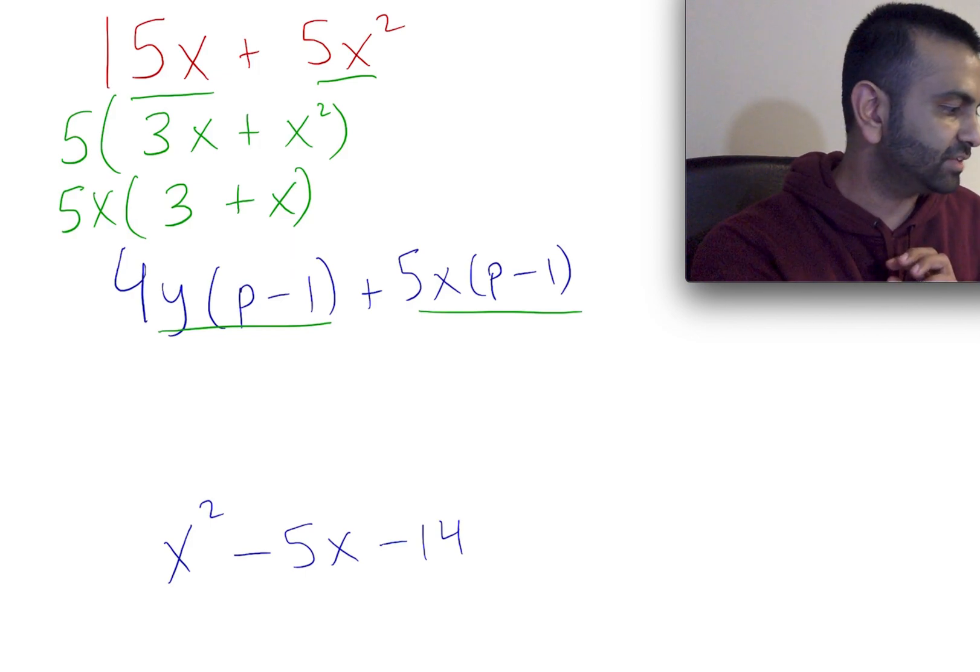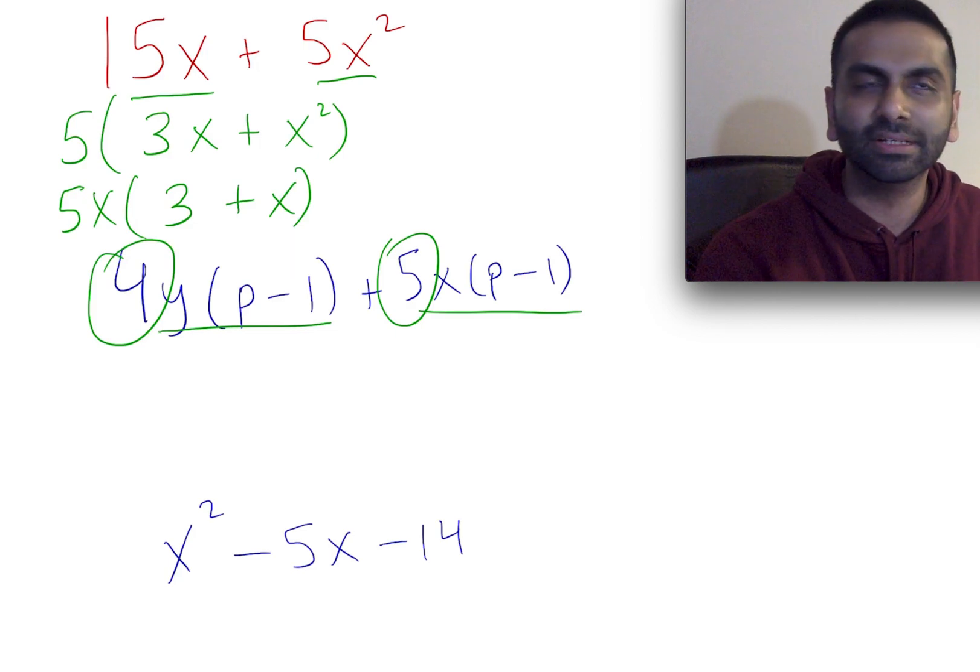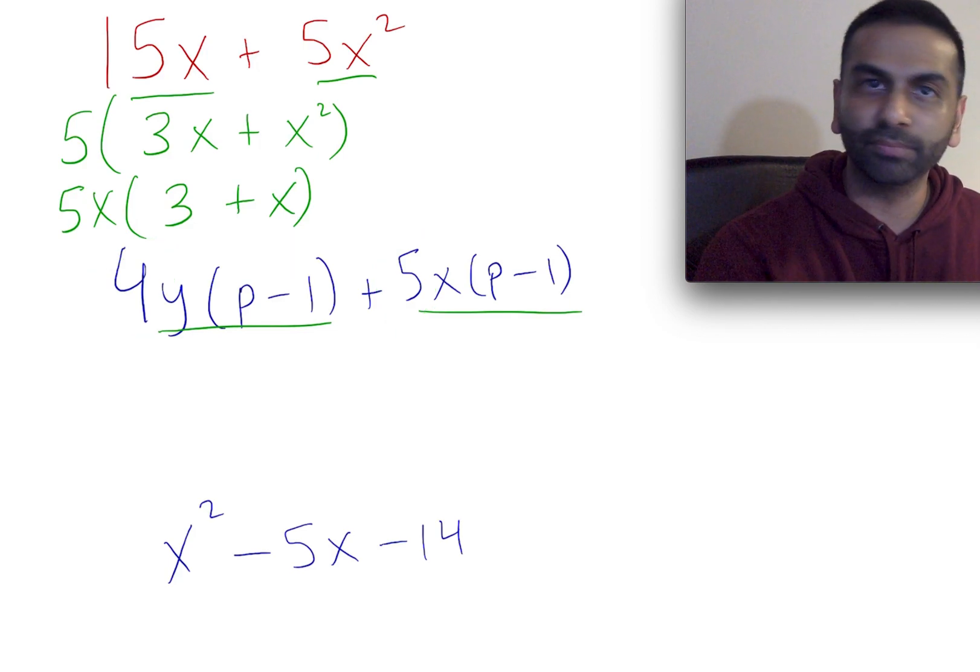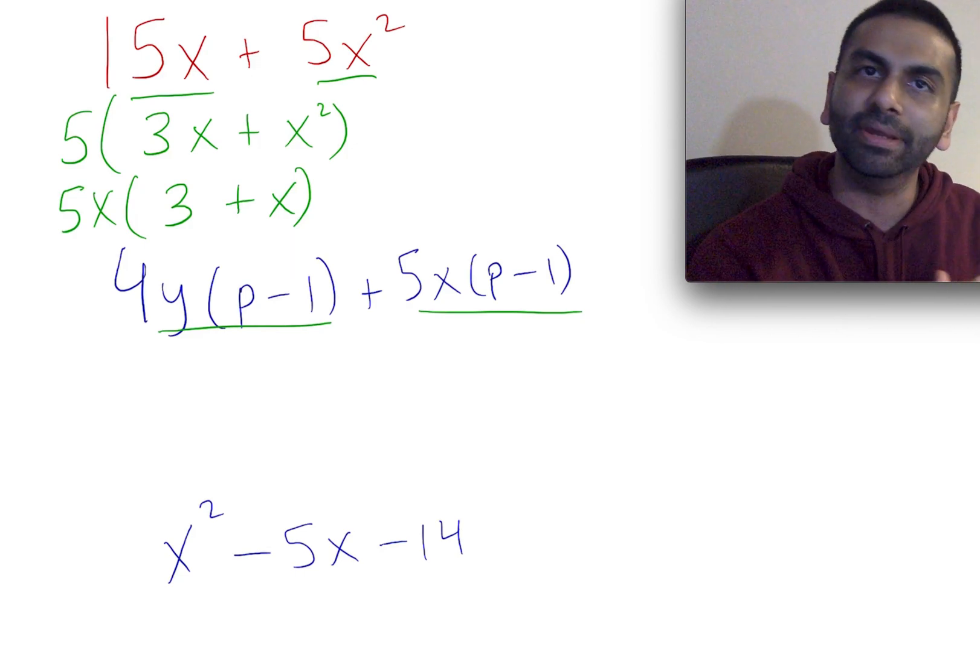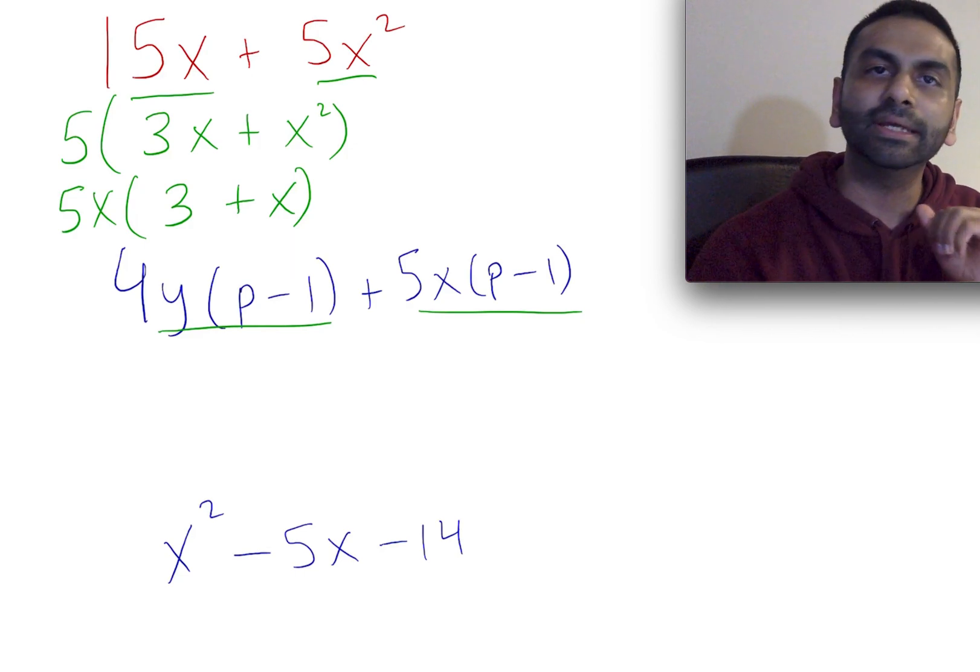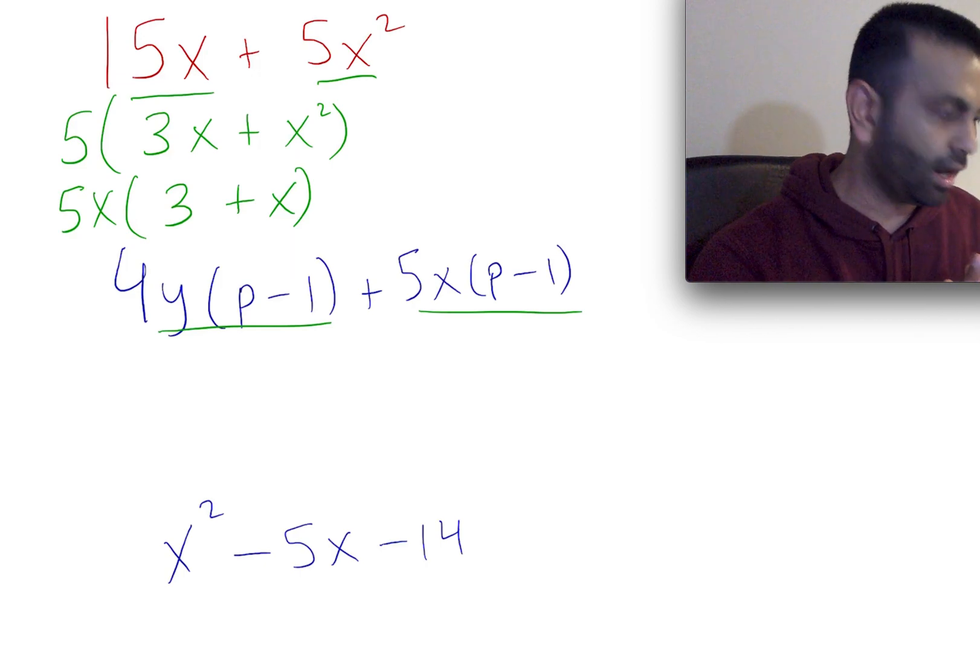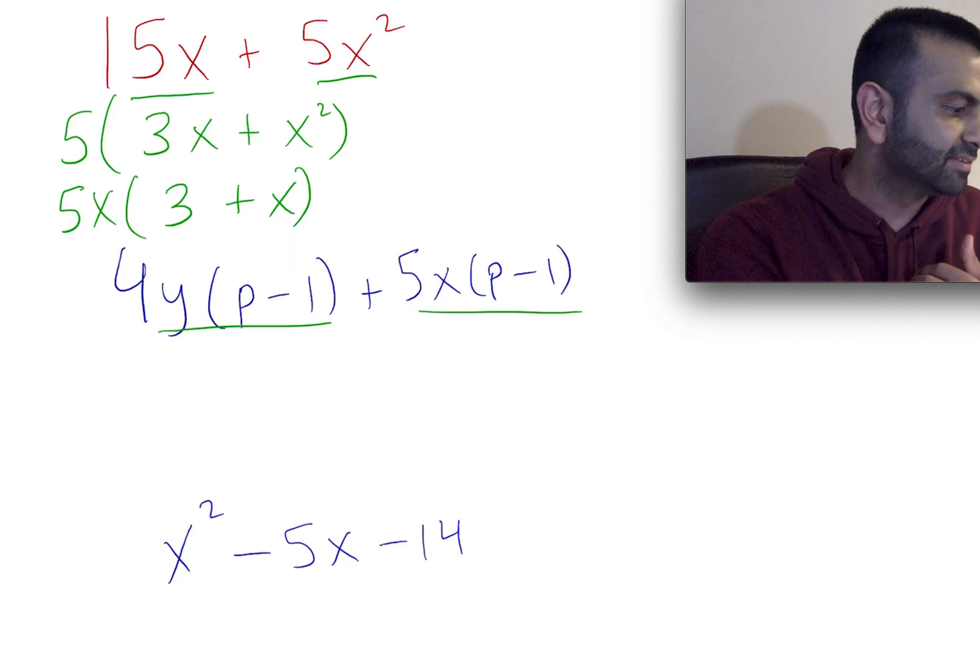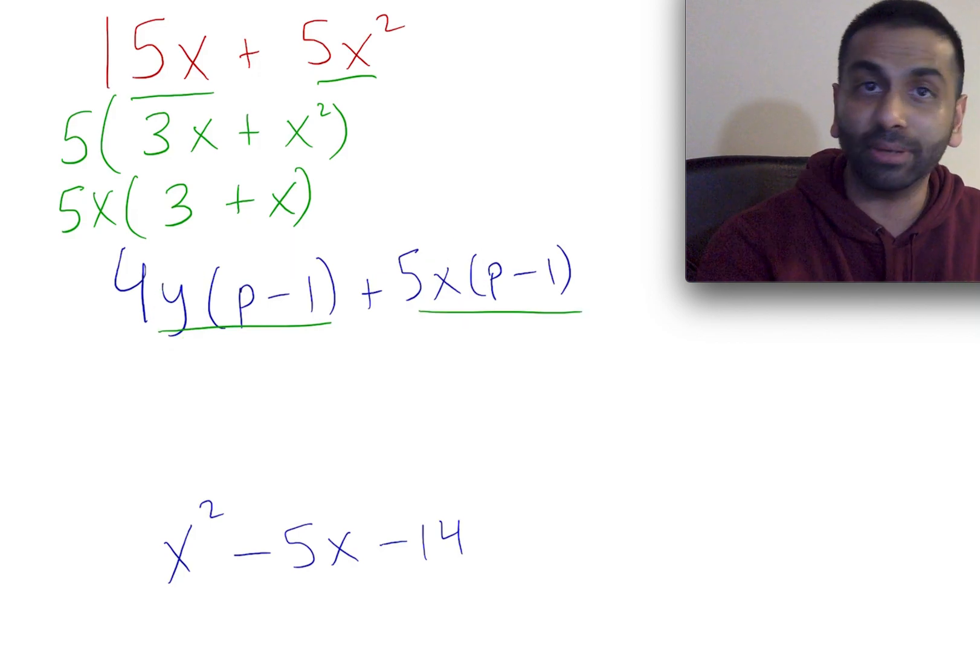The coefficient here is 4, here is 5. There really isn't anything—there's no common number. Those are relatively prime to each other. There's no common factors, so we can't factor out any coefficient here. Let's look at the variable front. This guy has a y, this guy doesn't have a y at all, so we can't do anything with that. Similarly, this guy has an x, that guy doesn't have an x, so we can't do anything on that front either.